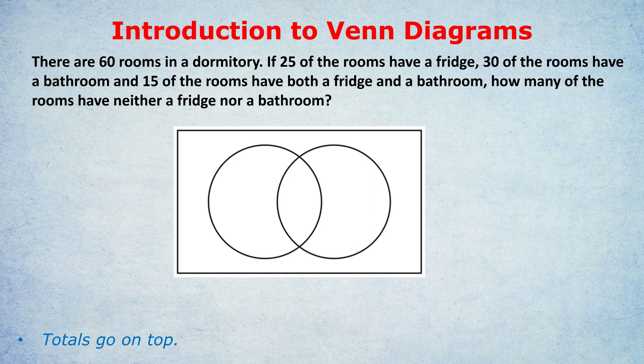The question asks how many rooms have neither a fridge nor a bathroom. You can try to solve this yourself before I explain. The first thing to do is put the information onto the Venn diagram. Bear in mind — and this is really important — the totals go on top. There are 60 rooms in the dormitory, so that total goes on top of the box. Some students try to get away without having a box, but we need a box. The total of everything in the box — fridge, bathroom, both, neither — is 60, so that goes on top.